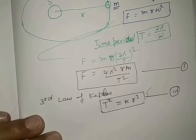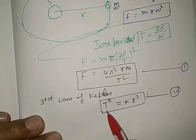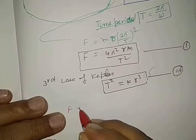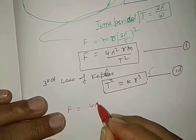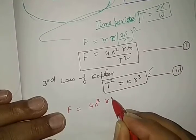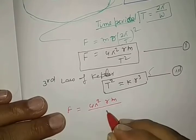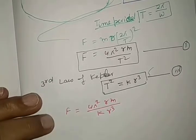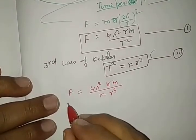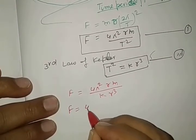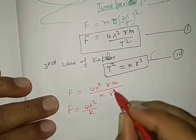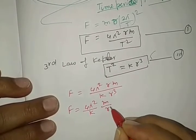Now, what we are going to do? We are going to put the value of T square in equation number 1. One may write F is equal to 4 pi square m r by k r cube. Now, see carefully, this expression can be written as 4 pi square by k times m by r square.